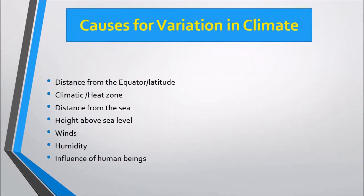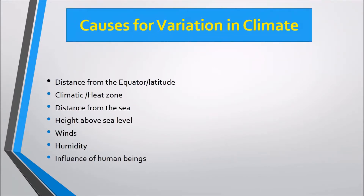What are the causes of variation in climate? There are different causes, such as distance from the equator or latitude, climatic heat zones, distance from the sea, height above sea level, winds, humidity, and the influence of human beings. We will look at each of these in a little detail.